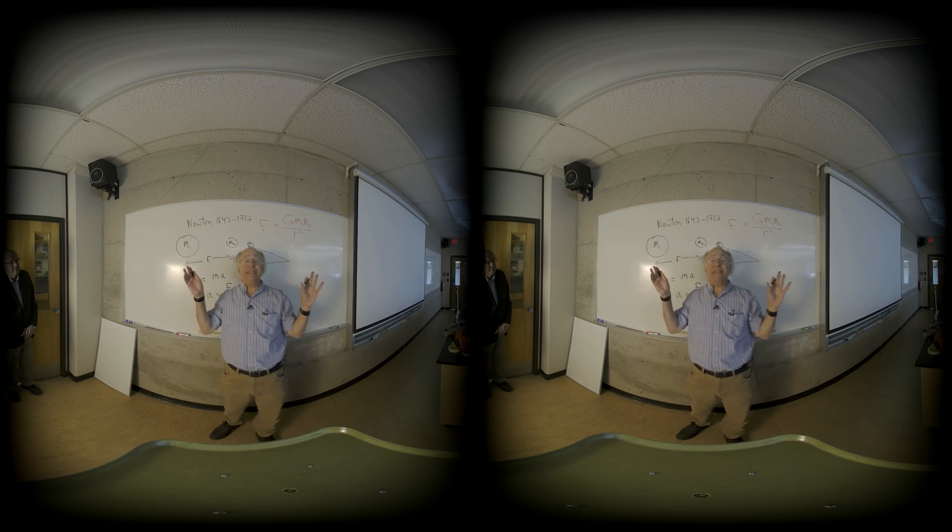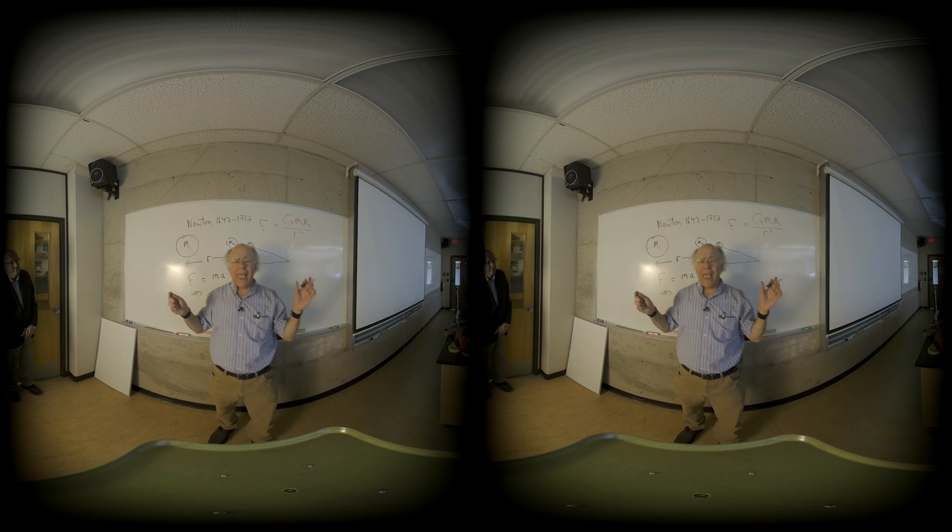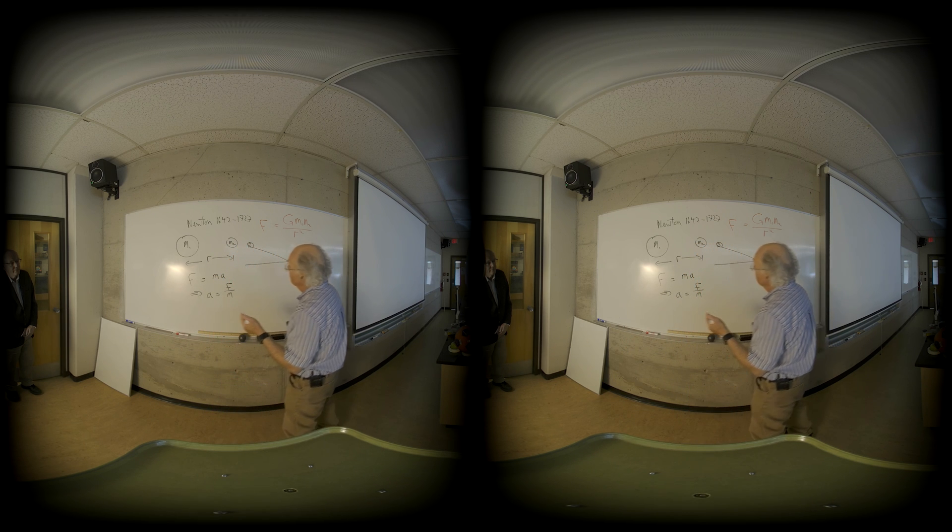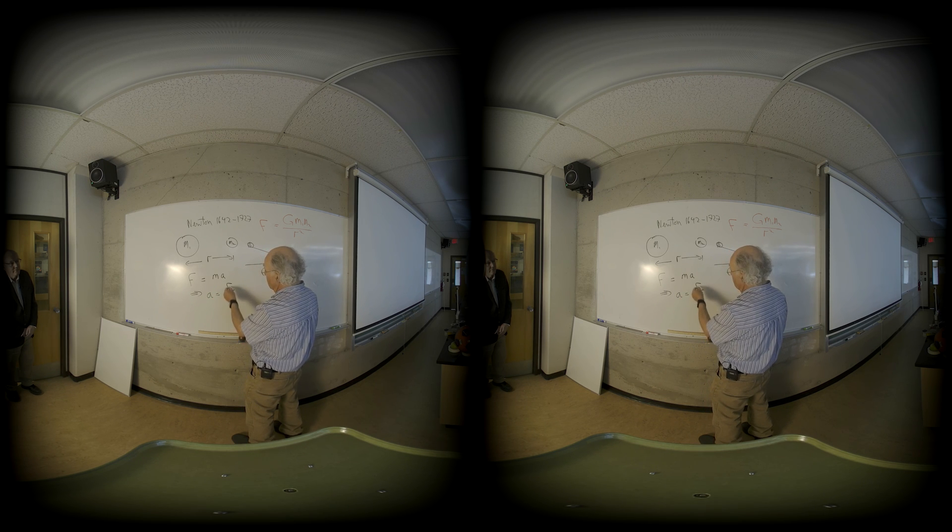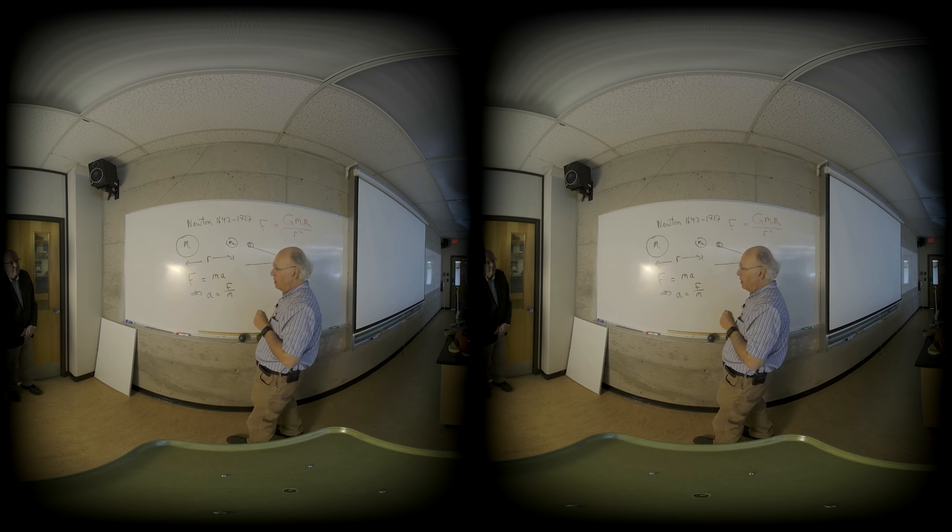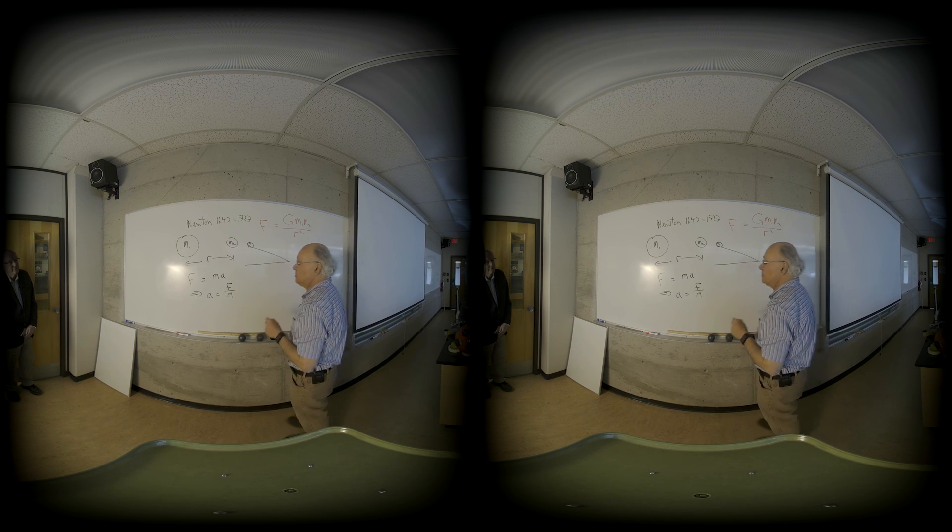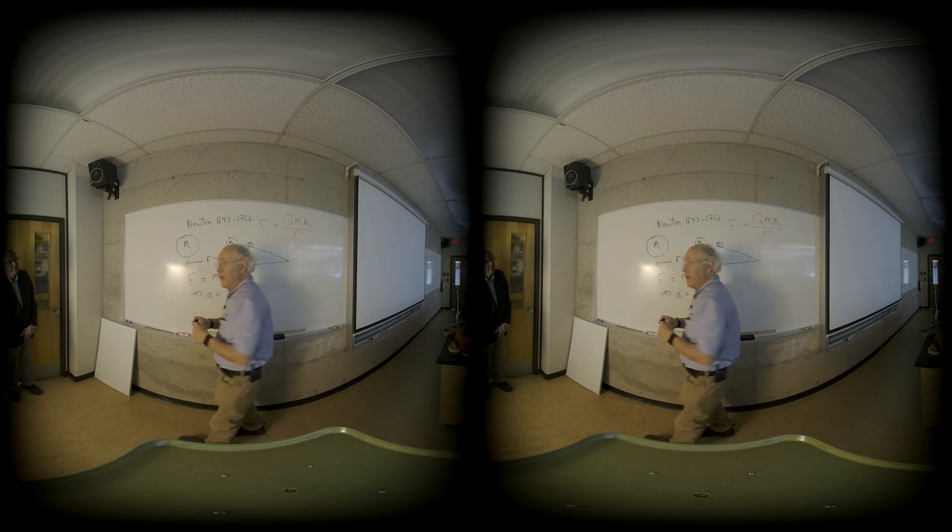His famous Leaning Tower of Pisa experiment, which may or may not have happened, where he dropped a large and small cannonball and they fell together. We can do that experiment in our home with large and small bodies. And what we found was that because the acceleration is independent of mass, from Newton's second law, the force of gravity, how do you get rid of the mass so acceleration doesn't depend on mass? The force of gravity must be proportional to the mass. Well, that would tell Newton that the force of gravity must be proportional to each of the masses, because by symmetry, neither of these two masses is favored.